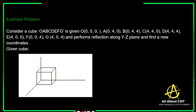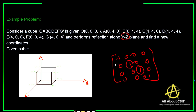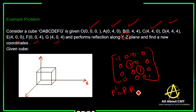Let us consider a problem. Here we are taking the original cube as in the example. This cube has coordinates O, A, B, C, F, E, G and we perform reflection along the YZ plane. YZ plane means X becomes negative and Y and Z remain positive. We need to find out the new coordinates for all the original coordinates by applying P' = P into the reflection along YZ plane.